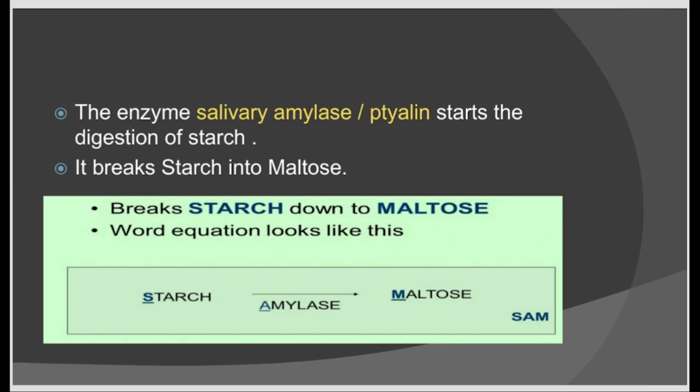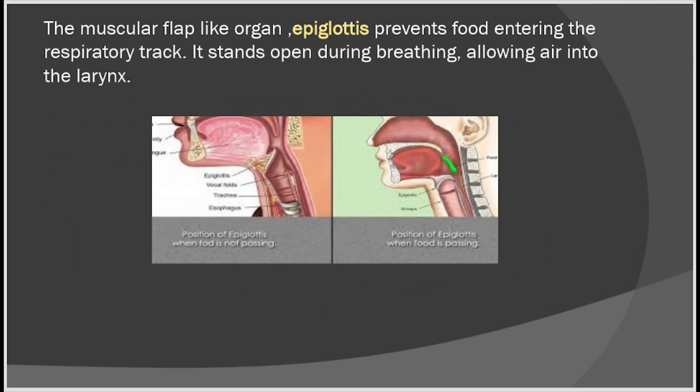The enzyme ptyalin, or salivary amylase, is secreted onto food by the salivary glands. It acts on starch and turns starch into maltose. Maltose is sweet — that's why a sweet taste is sensed when chewing rice or bread for some time. So both chemical and mechanical digestion begin at the buccal cavity. The initially digested food is mixed with saliva to form a bolus and pushed towards the pharynx.